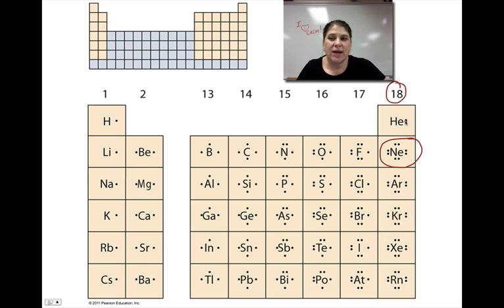Helium is the exception to that rule. Its only shell is its very first shell, the one that holds two, so it does have a full valence shell even though it only has two electrons. All of the other elements on this table are going to try to become like the noble gases, and that means either gaining or losing electrons to fill their shells.